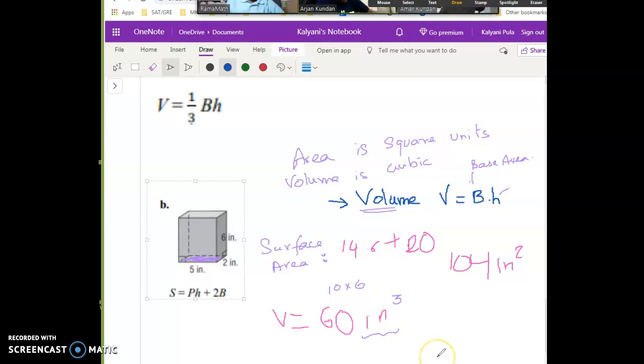Remember that anytime you're finding an area - surface area, lateral surface area, anything that ends up with area - you're going to put square units, just like this. But anything that is a volume, you have to put a 3, it's a cubic unit.